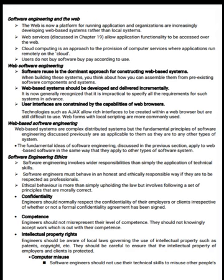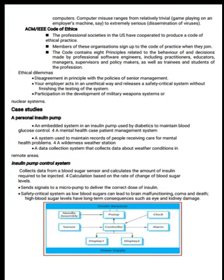Competence: engineers should not misrepresent their level of competence and should not knowingly accept work which is beyond their competence. Intellectual property rights: engineers should be aware of local laws governing the use of intellectual property such as patents and copyright, and should ensure that the intellectual property of the employer and client is protected. Computer misuse: software engineers should not use their technical skills to misuse other people's computers. Computer misuse ranges from relatively trivial game playing on an employer's machine to extremely serious dissemination of viruses.